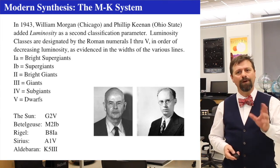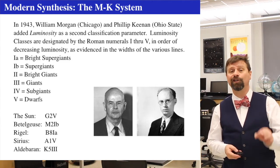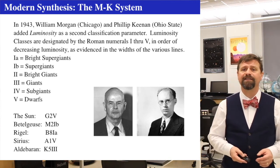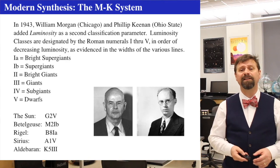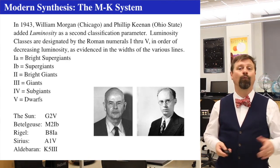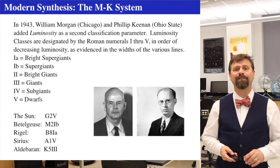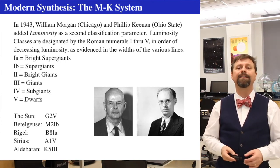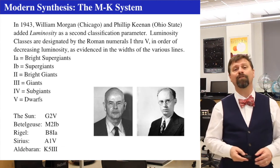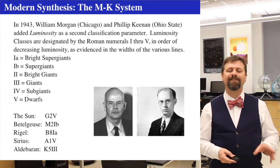Those six luminosity class classifications we see today are based on line widths. Not only is there a temperature profile, but there's a width profile. This sub-classification luminosity class is always added to a star if you can determine it. The Sun is a G2 dwarf; Betelgeuse is an M2 supergiant; Rigel is a B8 bright supergiant; Sirius is an A1 dwarf; and Aldebaran is a K5 giant.